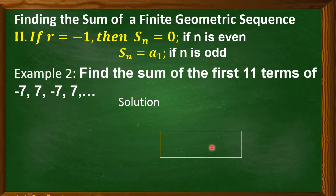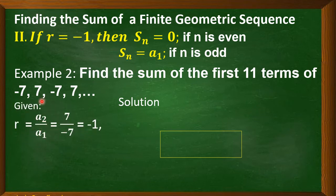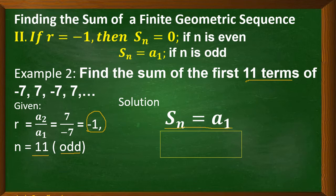Next example: find the sum of the first 11 terms of negative 7, 7, negative 7, 7, and so on. For the common ratio: a sub 2 divided by a sub 1 gives 7 divided by negative 7, which equals negative 1. Our n is 11, and 11 is an odd number — not divisible by 2. So S sub n equals the first term when r equals negative 1 and n is odd. Our first term is negative 7, therefore the sum of the first 11 terms is equal to negative 7.